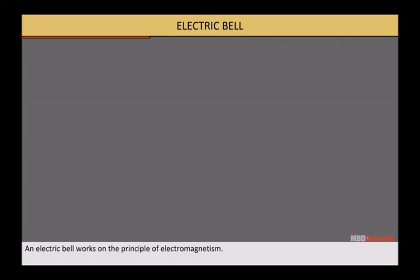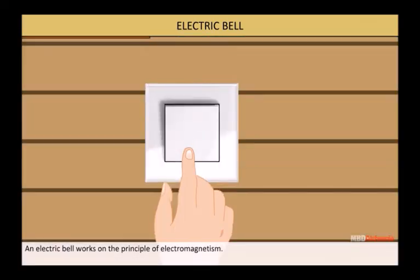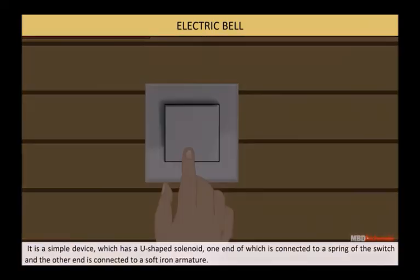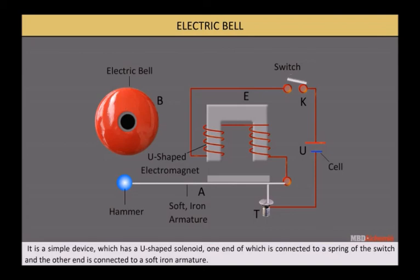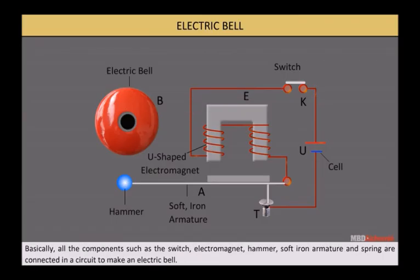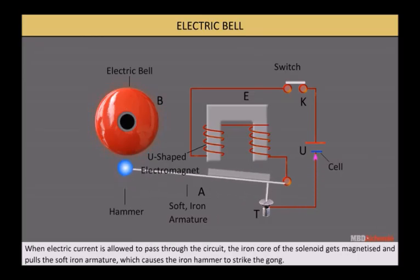An electric bell works on the principle of electromagnetism. It is a simple device which has a U-shaped solenoid, one end of which is connected to a spring of the switch and the other end is connected to a soft iron armature. Basically, all the components such as the switch, electromagnet, hammer, soft iron armature, and spring are connected in a circuit to make an electric bell.